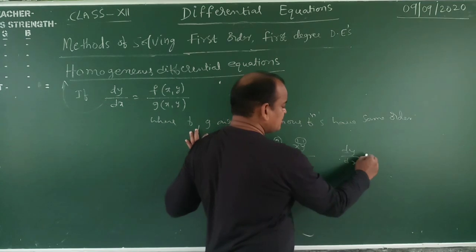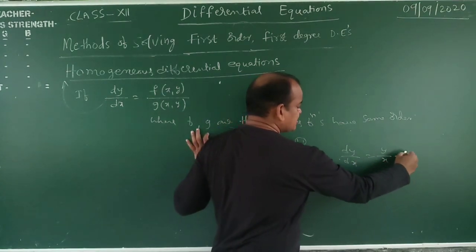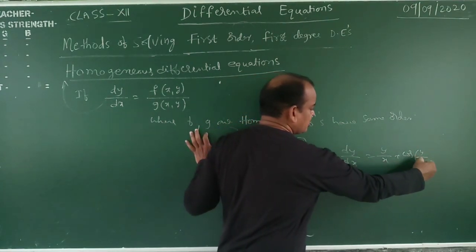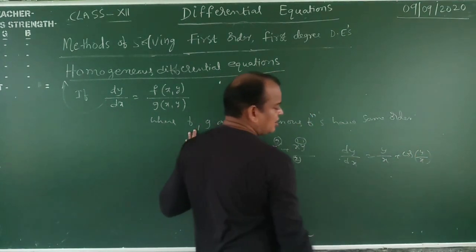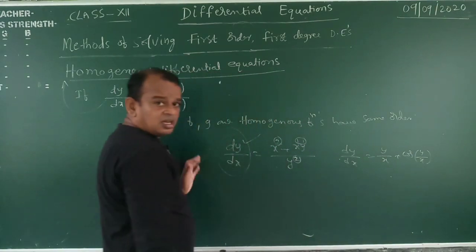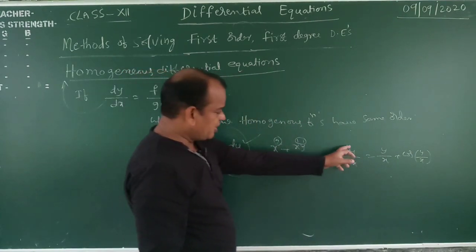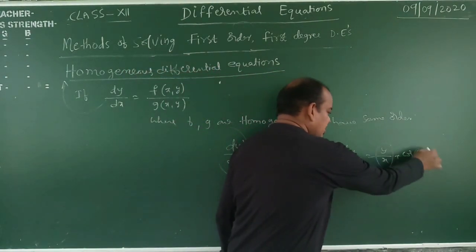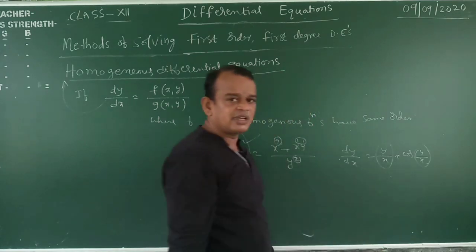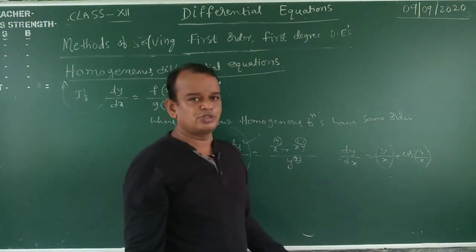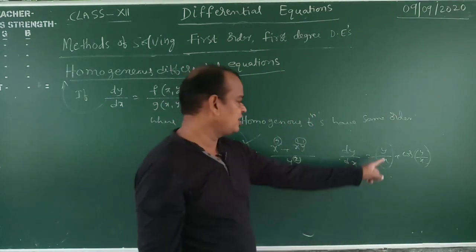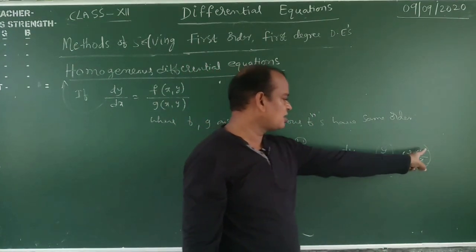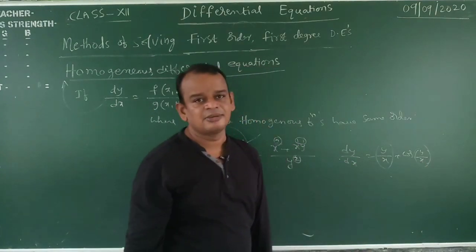Suppose dy/dx = y/x + cos(y/x). Whenever the right-hand side contains y/x or x/y, it is a homogeneous equation. Here degree 1, degree 1, degree 1 — all equal degrees.